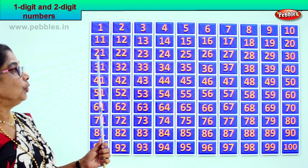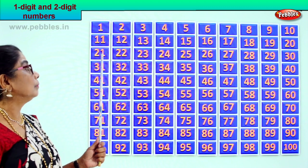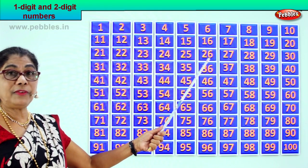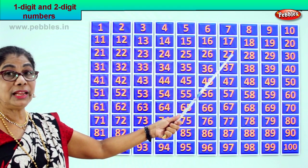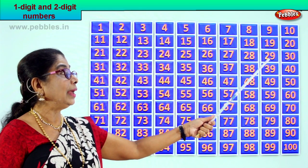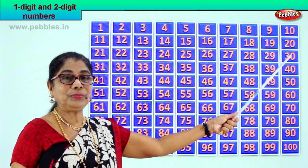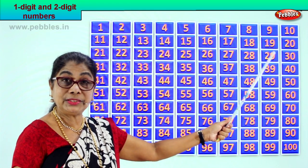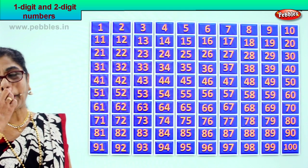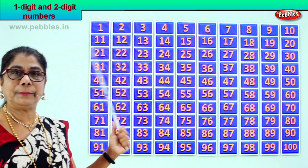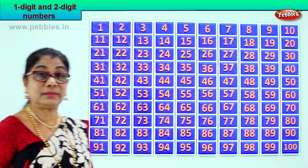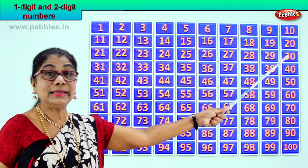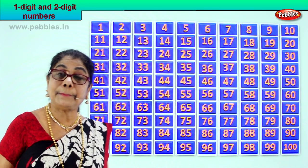Let's take the next row. You have 2 and 1 — 21, 2 and 2 — 22, 2 and 3 — 23, 2 and 4 — 24, 2 and 5 — 25, 2 and 6 — 26, 2 and 7 — 27, 2 and 8 — 28, 2 and 9 — 29, and 3 and 0 — 30. Here you have 0 in the ones place and 3 in the tens place. 21 to 30 — all of them are two-digit numbers.